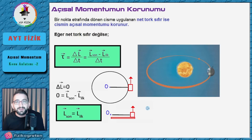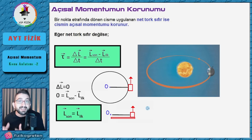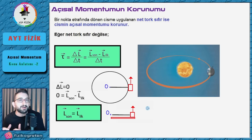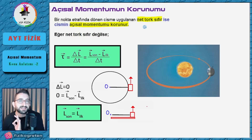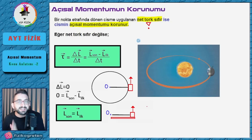Açsal momentum ne zaman korunur, ne zaman korunmaz? Her zaman korunmaz. Eğer bir sisteme etki eden net tork sıfırsa açsal momentum korunur. Bakın, net kuvvet değil, net tork sıfırsa açsal momentum korunur. Peki çizgisel momentumla ilişkilendirelim.